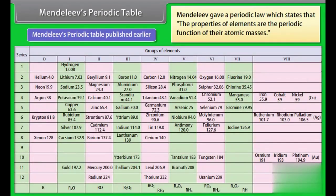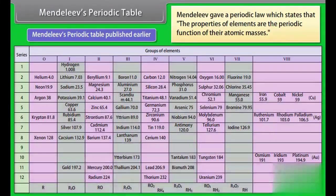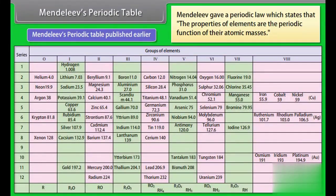Mendeleev's Periodic Table: Mendeleev gave a periodic law which states that the properties of elements are the periodic function of their atomic masses. Uses of Mendeleev's periodic table: First, elements are classified into groups with similar properties, thus facilitating the study of properties of elements. Second, Mendeleev left certain vacant places in his table, which provided a clue for the discovery of new elements. Some of the properties could be predicted with fair accuracy.